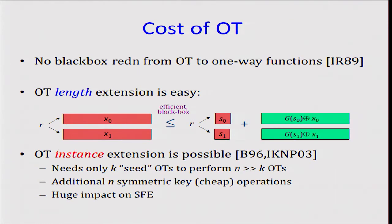We know that the cost of OT is significantly high. You cannot get it from symmetric key operations. But suppose we have OTs on short strings. Then by a standard application of pseudo-random generators, we can get OTs on long strings. This is called OT length extension.